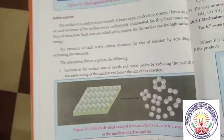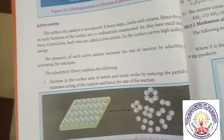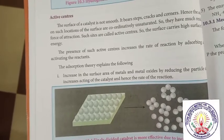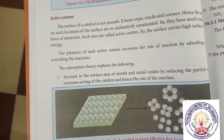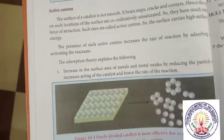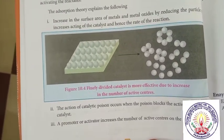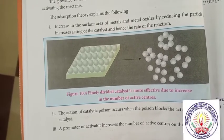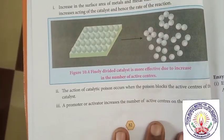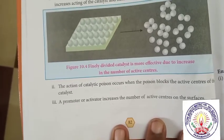Increase in the surface area of metals and metal oxides by reducing the particle size increases the activity of the catalyst and hence the rate of the reactions. The action of catalytic poisons occurs when the poison blocks the active centers of the catalyst.